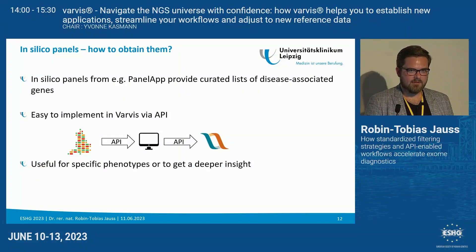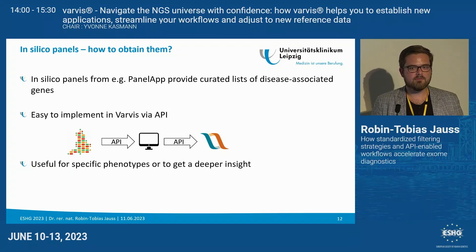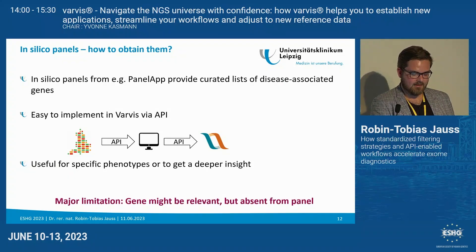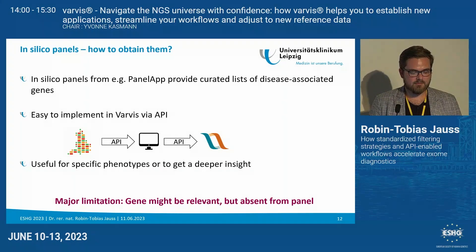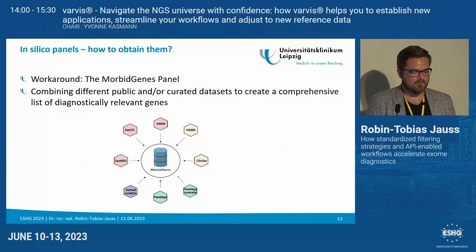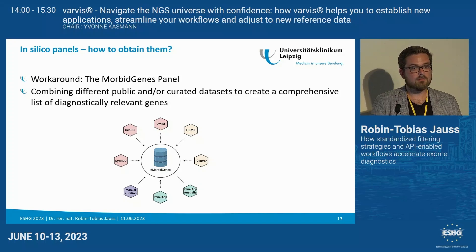These in silico panels are very useful when dealing with very specific phenotypes where only a small subset of genes can be causative. But most of the time — which is especially true for neurodevelopmental disorders and epilepsy — these panels might not be comprehensive enough. The major limitation of in silico panel approaches is that a gene can in fact be relevant, but it may be absent from the panel.